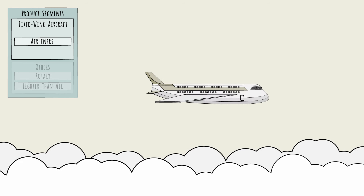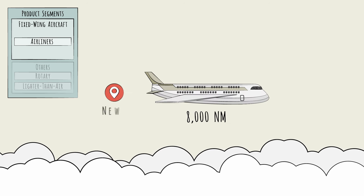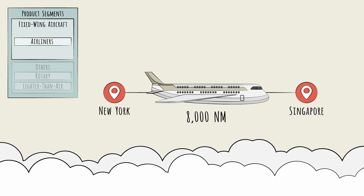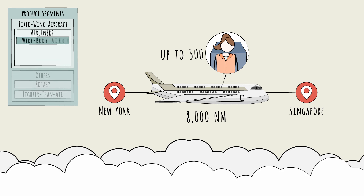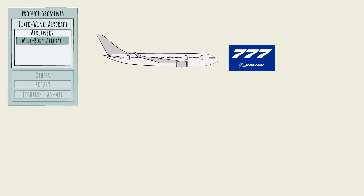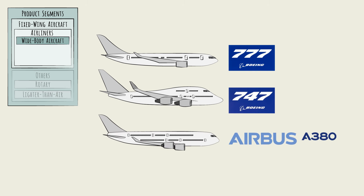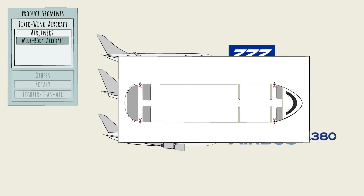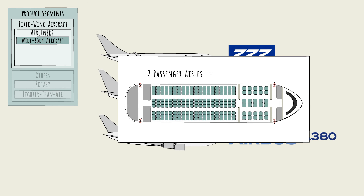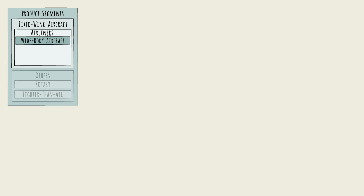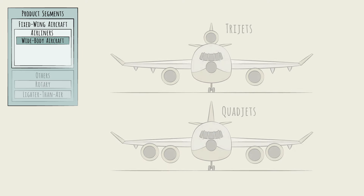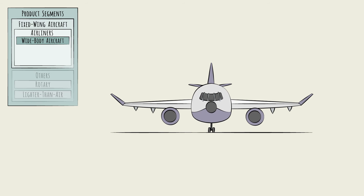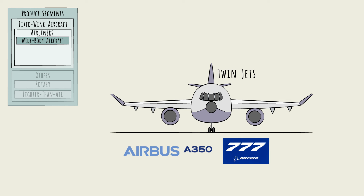The longest range missions — exceeding 8,000 nautical miles, roughly the distance from New York to Singapore — and the highest load requirements, up to 500 passengers, are generally served by the biggest planes in the world: wide-body aircraft. The Boeing 777 and 747 and Airbus's A380 are all examples. As a heuristic, if there are two passenger aisles in the main cabin, it's a wide-body plane. Historically, wide-body aircraft used three or four engines — called trijets or quadjets — however, advances in engine technology now allow twin jets, such as the A350 or B777, to perform the same missions with less fuel.